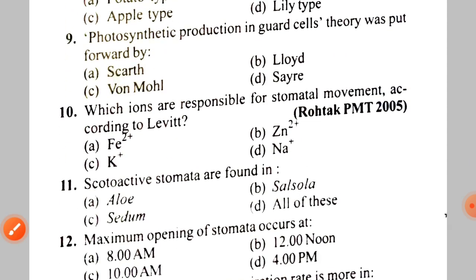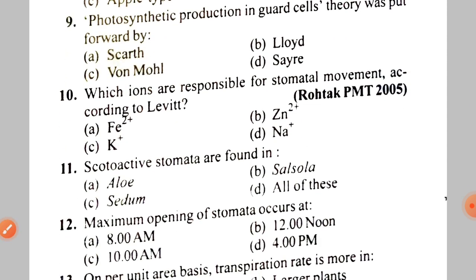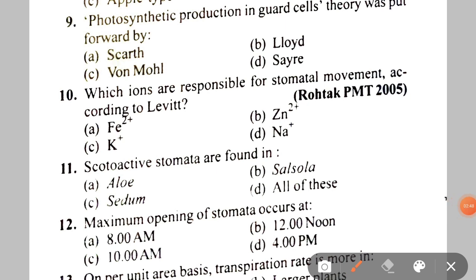Next: the photosynthetic production in guard cells theory was put forward by A. Scarth, B. Lloyd, C. Imamura, D. Sire. The correct answer is C — Imamura.